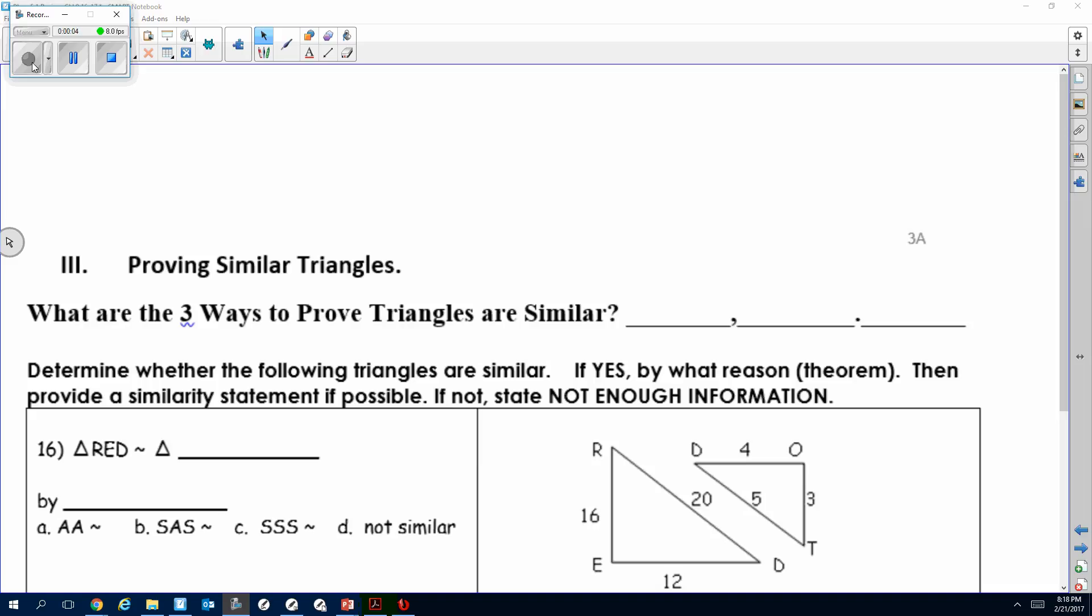Okay, this is section three, proving similar triangles. The key to this is making sure we know the three ways to prove triangles are similar. Our three ways are angle-angle similarity, which means basically you need two congruent angles.